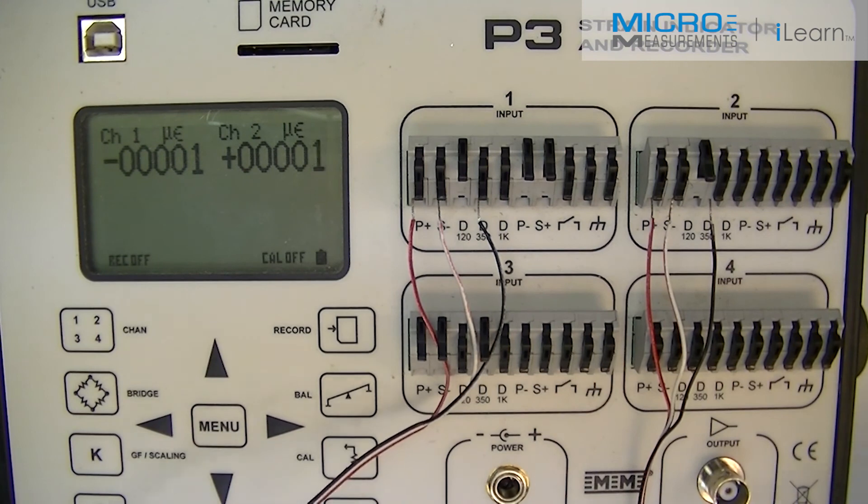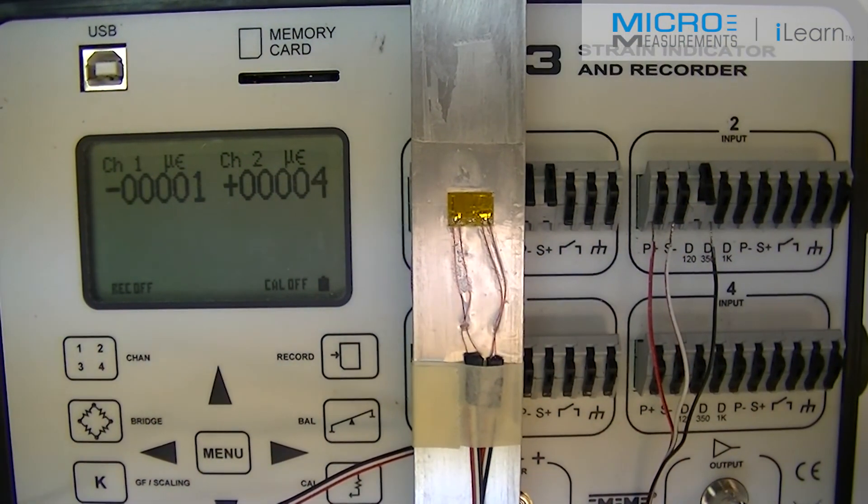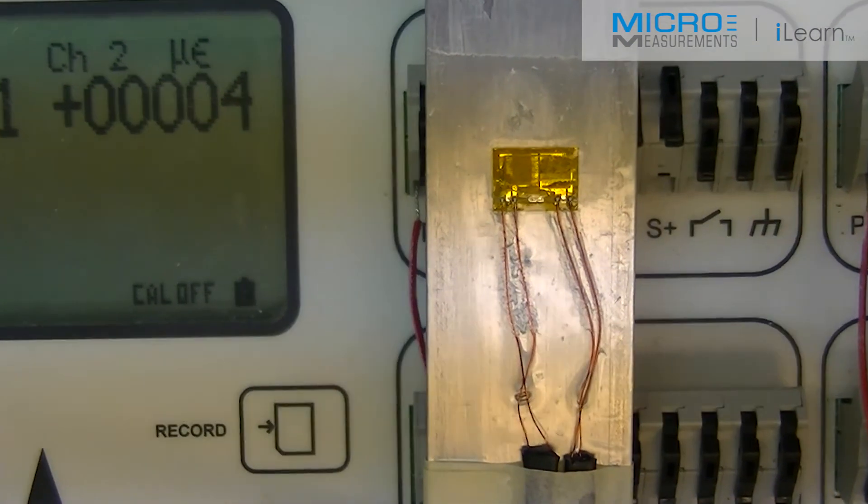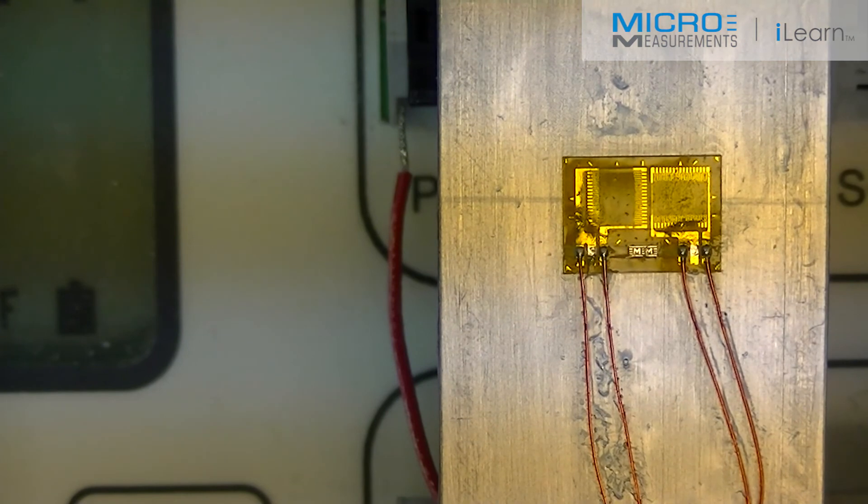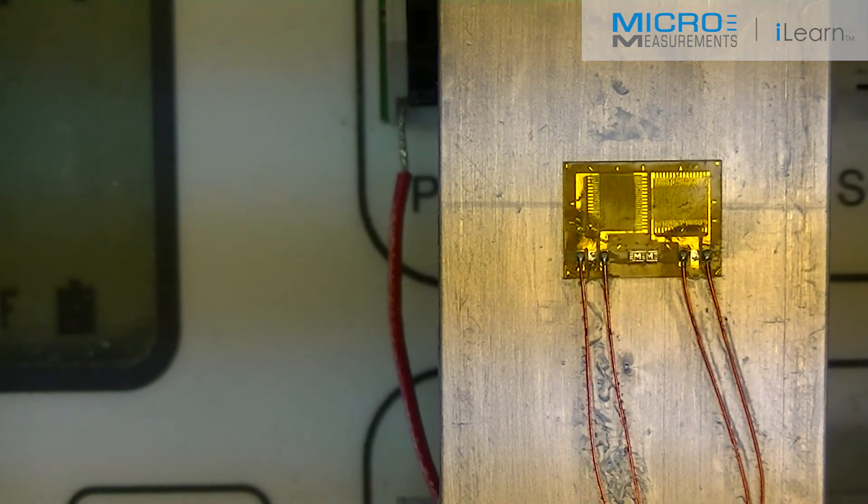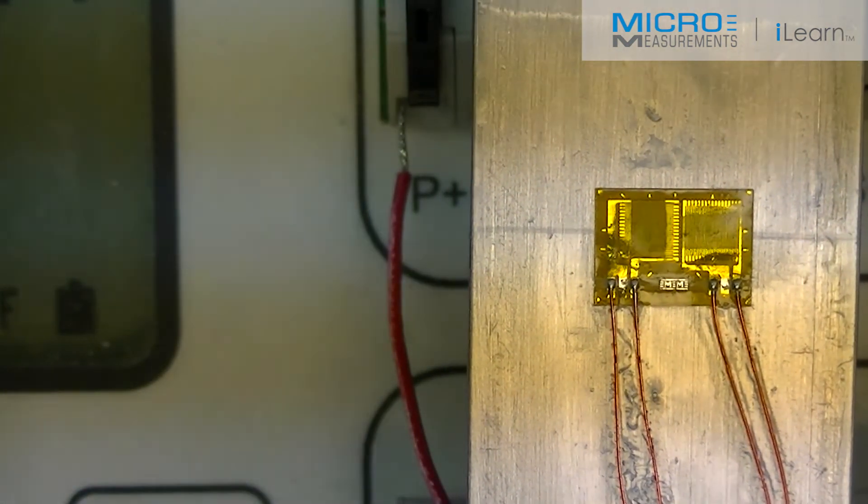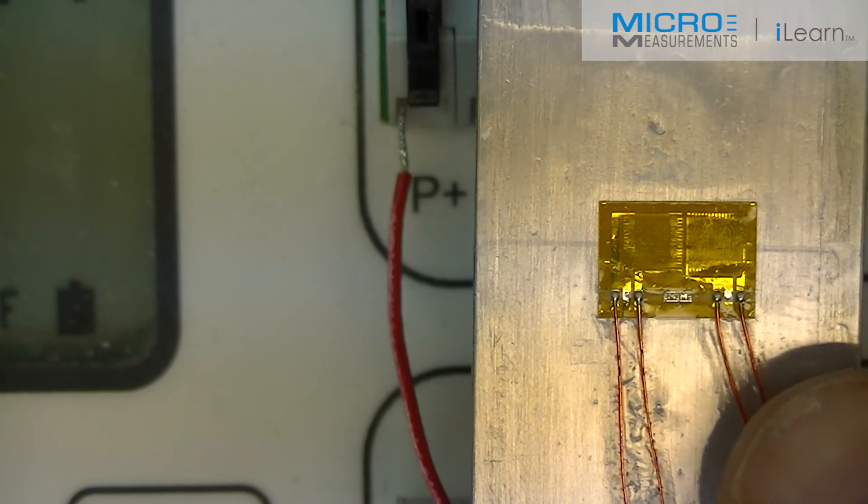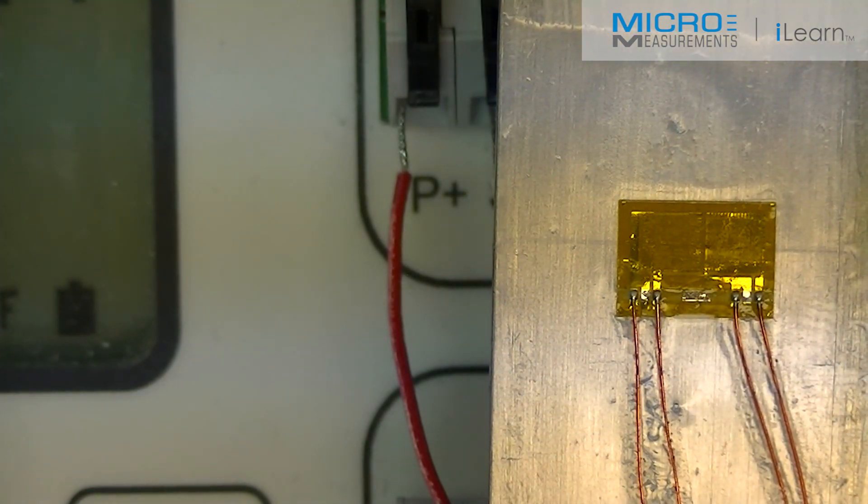Now we have the band extensometric. As you can see, the rosetta in this case is connected to our indicator, the P3 model of Micro-Measurements. Each of the band we have connected to one of the channels. The rejilla 1 is the rejilla transversal, that is perpendicular to the main direction and is connected to channel 1, while the rejilla number 2 is the longitudinal and is connected to channel 2.